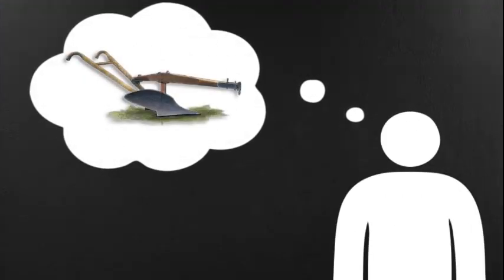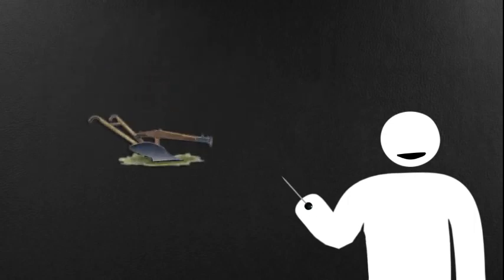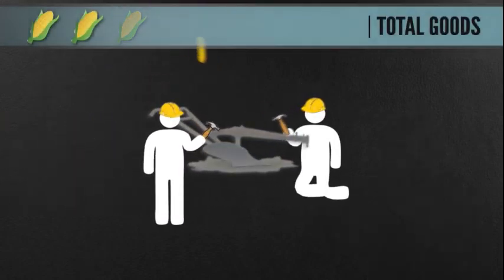What if they decide to build a plow to help increase their productivity? With a plow, they could produce twice as much in half the time. Well, plows don't just pop out of thin air. It takes time to make them. And while it's being constructed, those workers won't be producing any food.